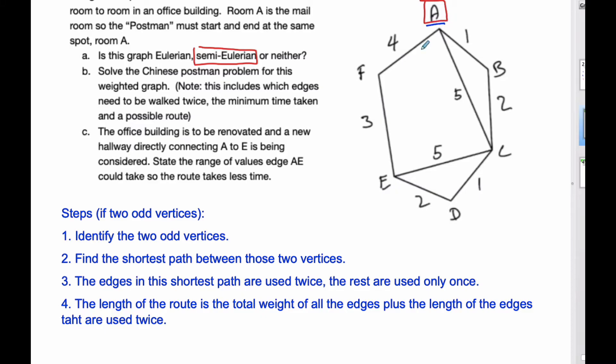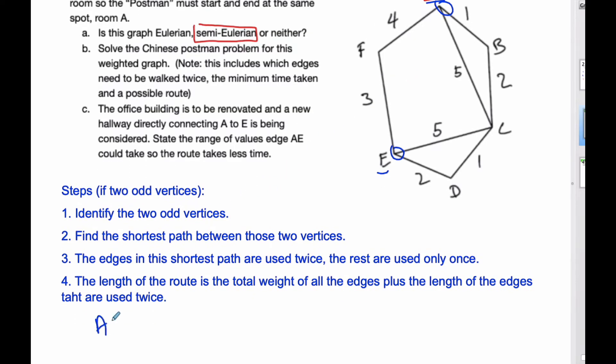That's going to be A and E because they both have 3. And then from there we're going from A to E and we have to find the shortest path between these two vertices.